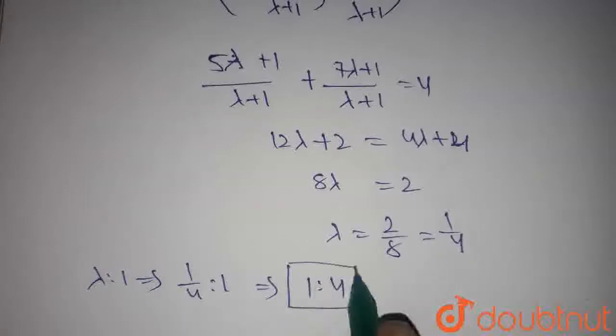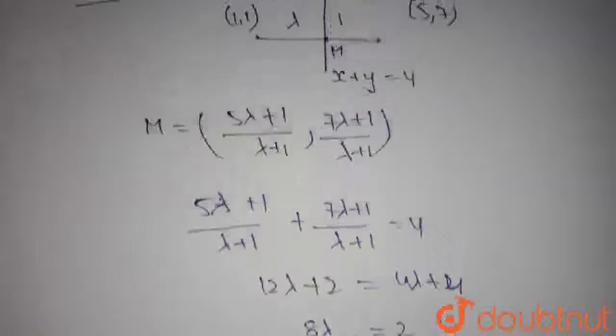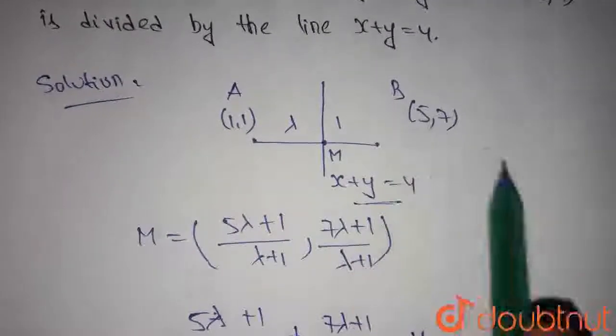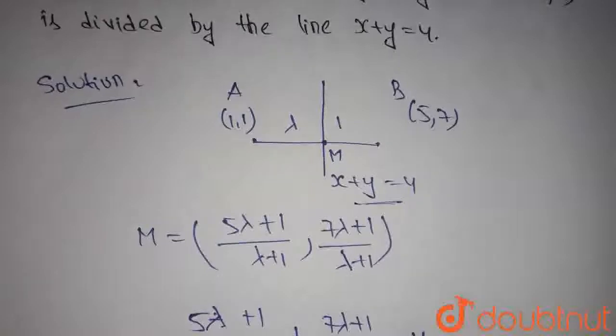So this is the ratio in which the line x plus y equals 4 divides the line segment joining AB. Thank you for watching the video. I hope you found this video helpful.